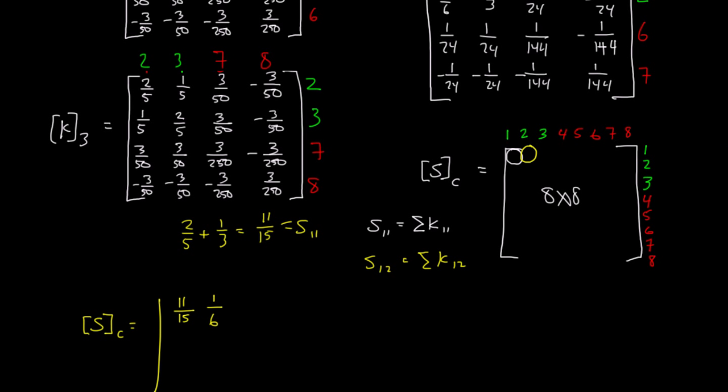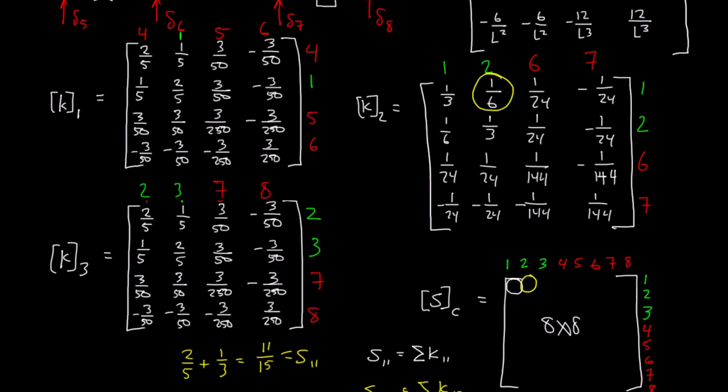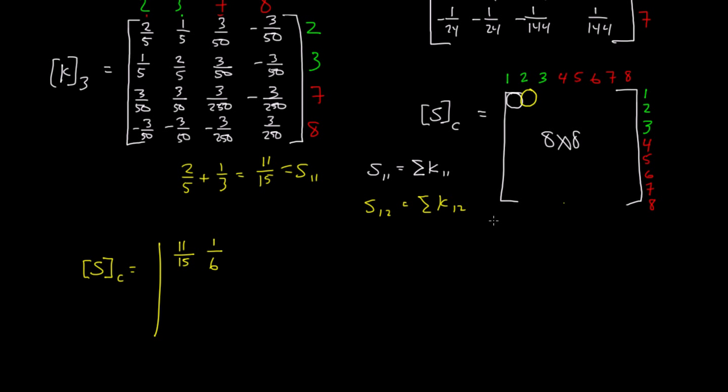For 1,3, we look for a 1,3 in all of the 3 K submatrices. In this case, we don't have any 1,3. In K sub 1, there's no 1,3. In K sub 2, there's no 1,3. And in K sub 3, there's no 1,3. So that means S sub 1,3 is 0.